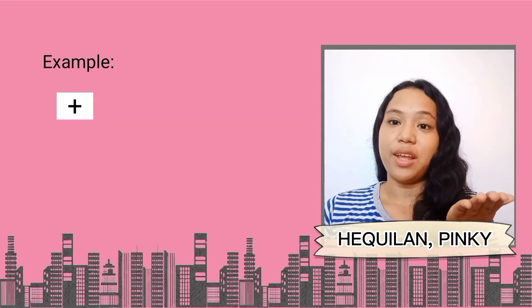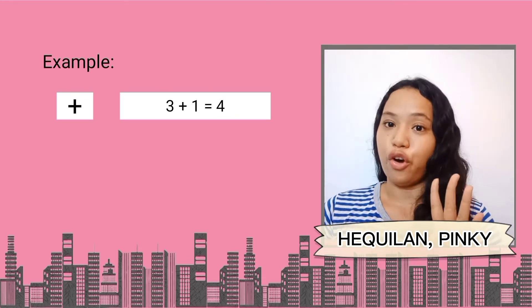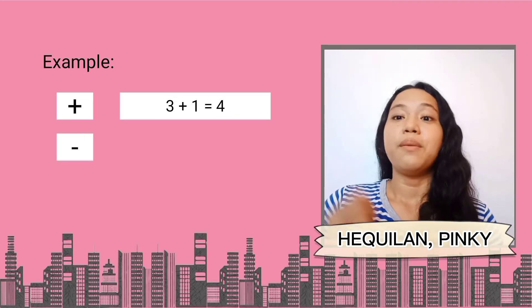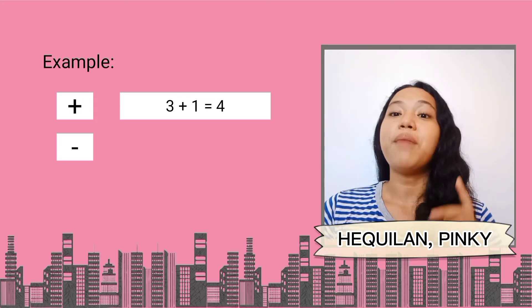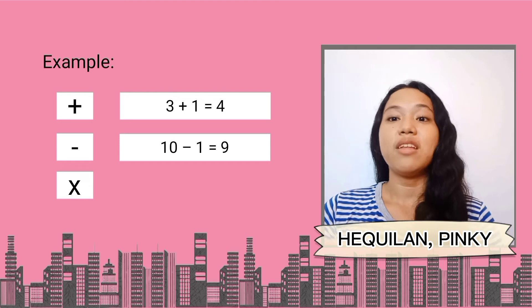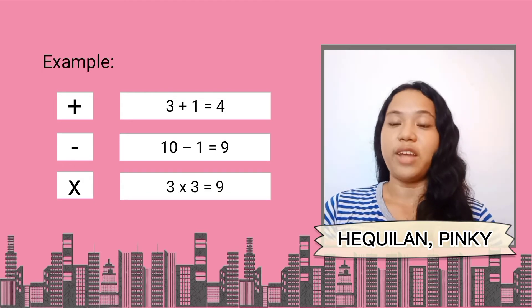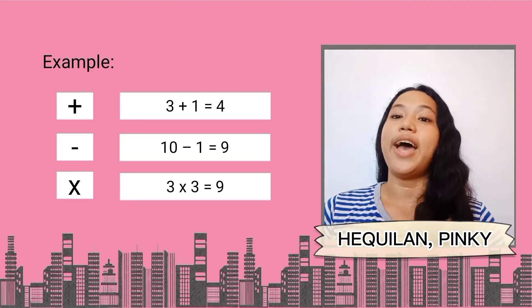This symbol means plus. Used as 3 plus 1 is equal to 4. And this symbol means minus. Used as 10 minus 1 is equal to 9. And this symbol means multiply. Used as 3 times 3 is equal to 9.